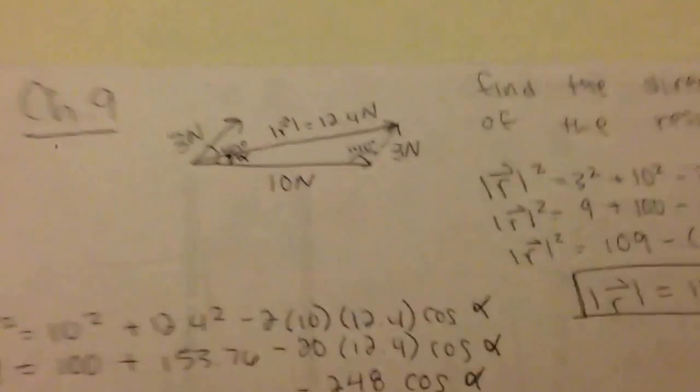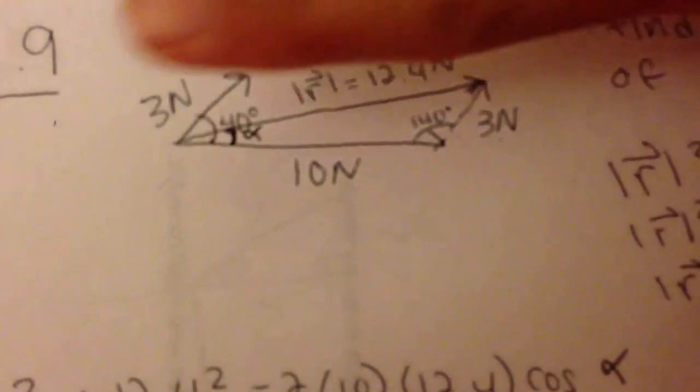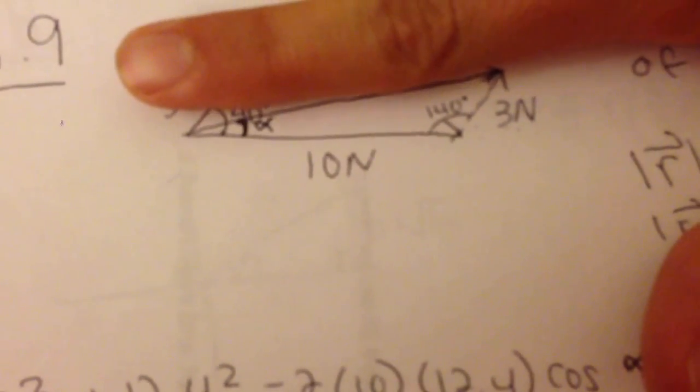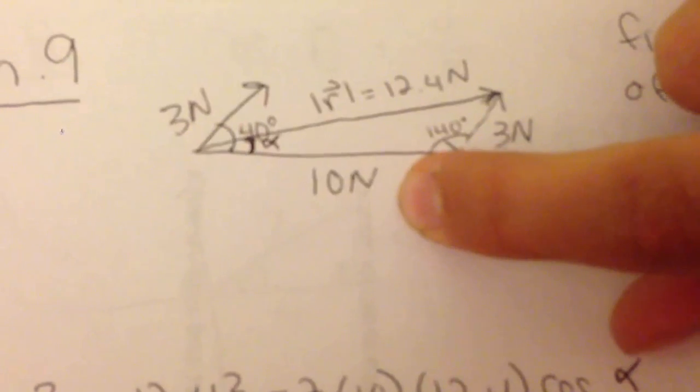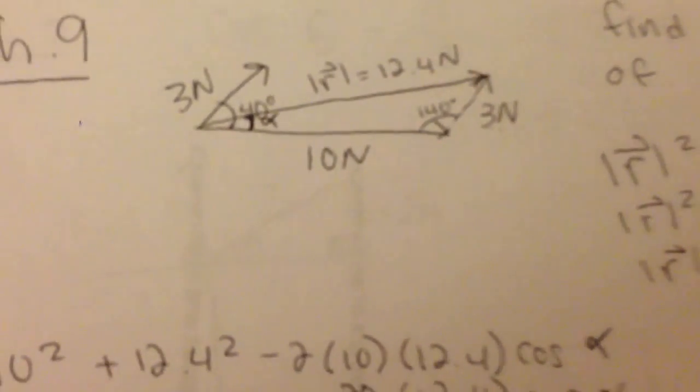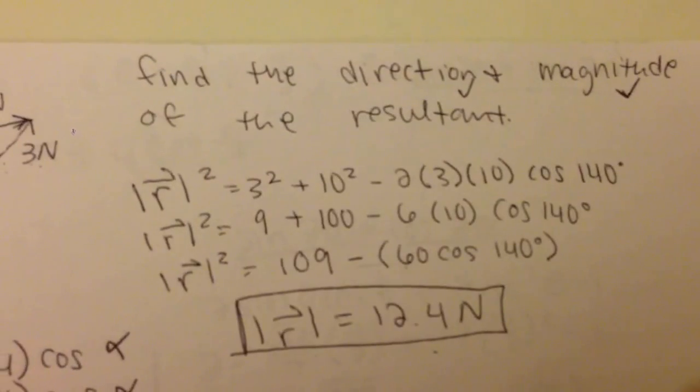And what we are given is this picture right here without that little information. We are given the 40 degree angle, the 3 newtons, and the 10 newtons. So our directions say find the direction and magnitude of the resultant.